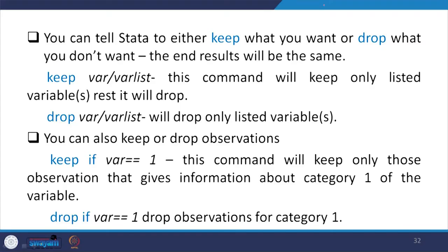You can tell Stata to either keep what you want or drop what you do not want — the end results will be the same: keep will drop others, drop will keep others. It is also interesting to note that you can keep or drop observations, not just variables. For example, keep if a variable equals 1 — within a variable that has different categories 1, 2, 3, 4, if you only want to continue with category 1 and others are not going to be useful for you.